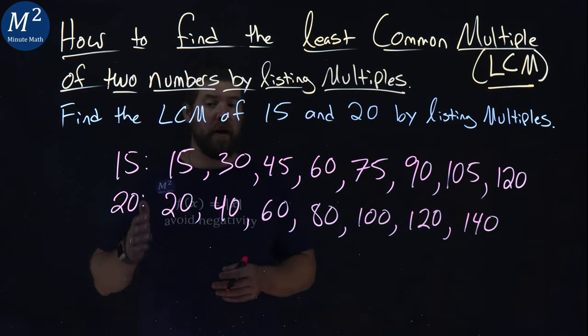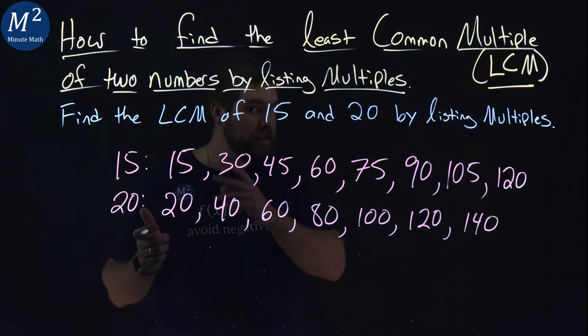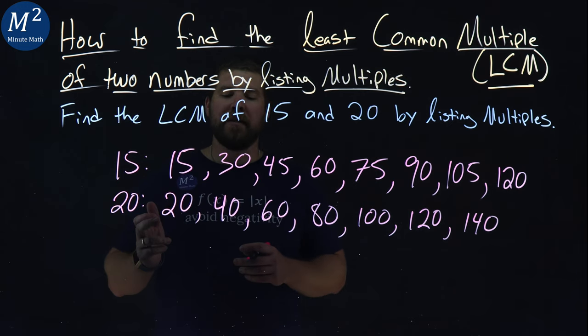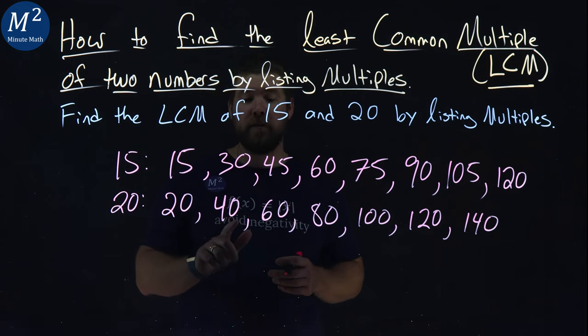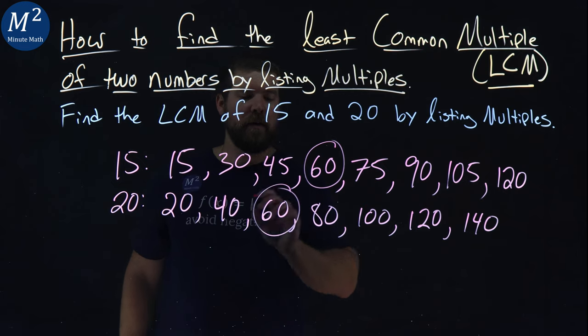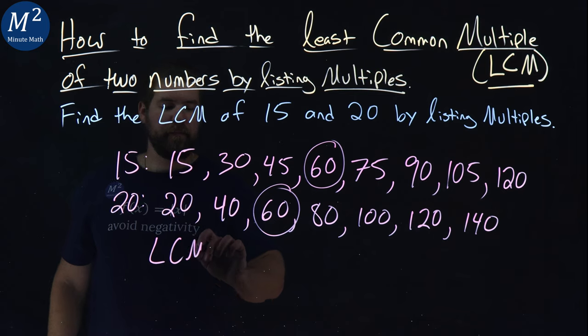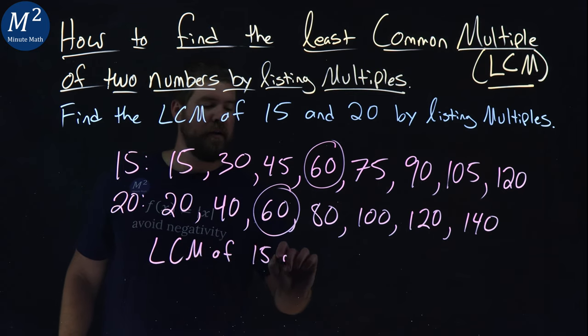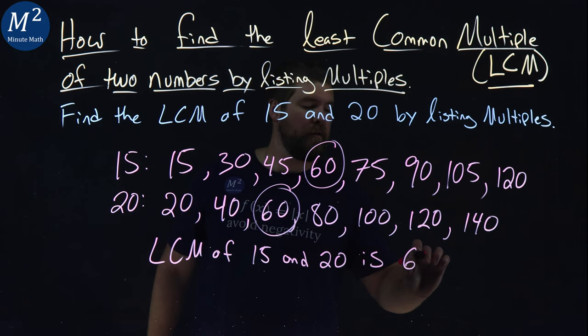Now, the least common multiple, we're going to find the first number in each one of these lists, listing the multiples, that is common in both of them. No 15, no 30, no 45, 60. 60 is in both of these lists. So, the LCM of 15 and 20 is 60.